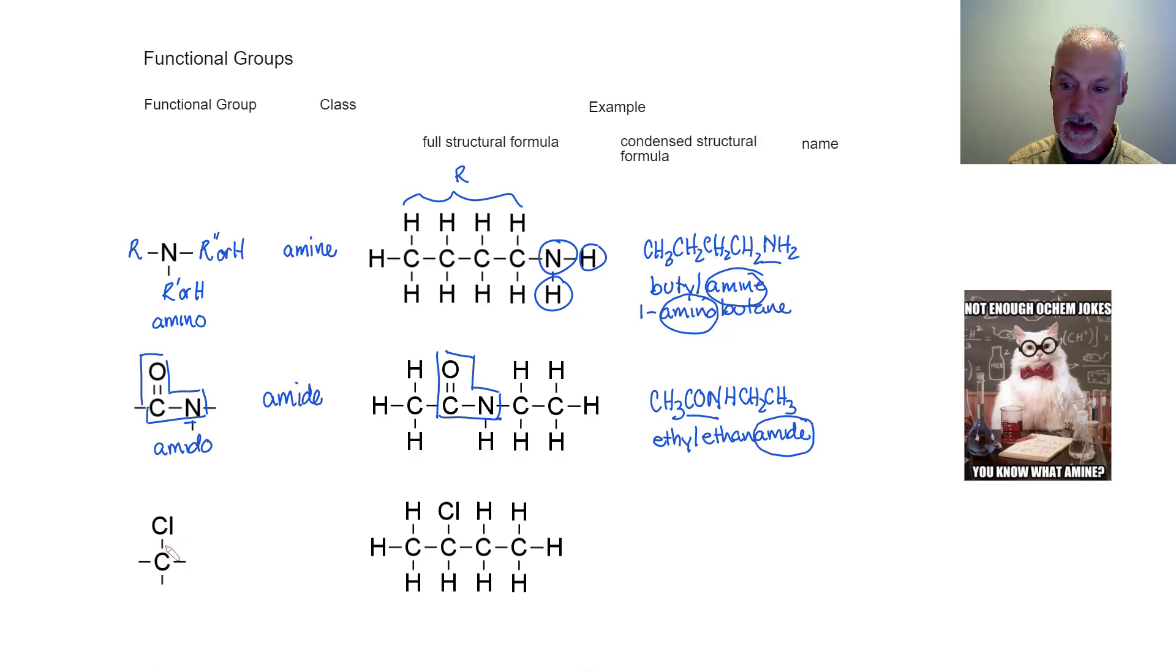Lastly, carbon connected to chlorine, but it could also be fluorine, bromine, or iodine. In fact, any of the halogens. And these are called halogeno, and it gives rise to a class of compounds called the halogenoalkanes.